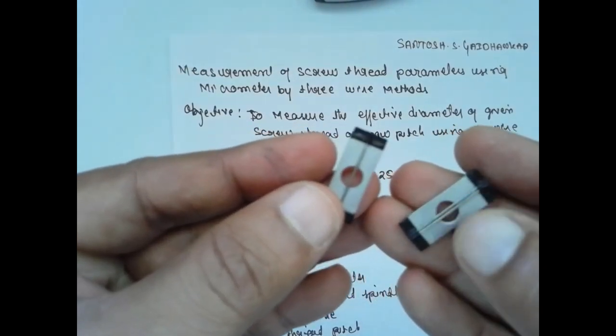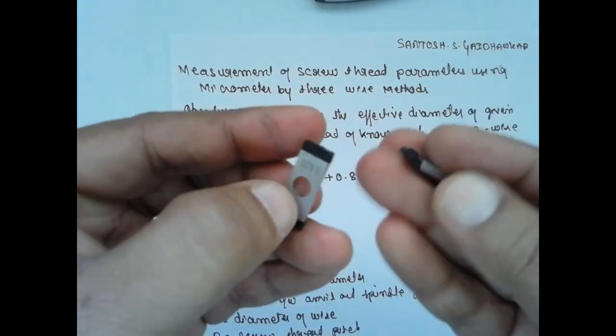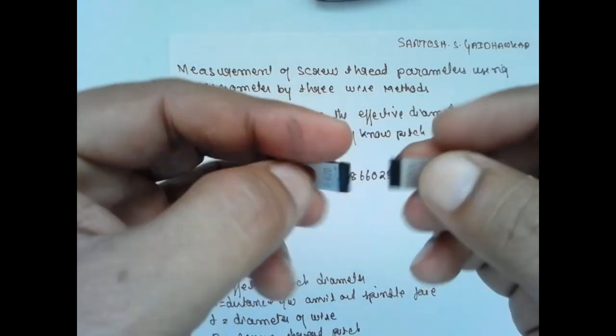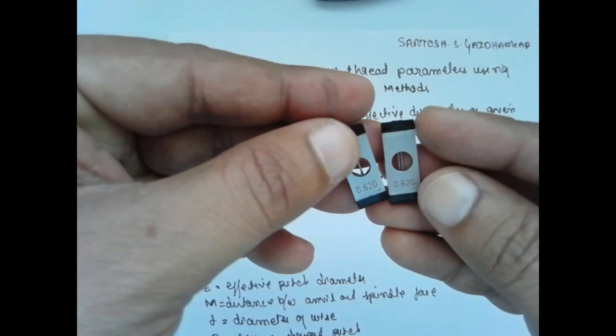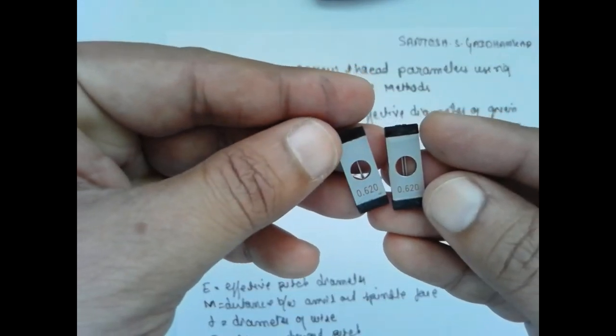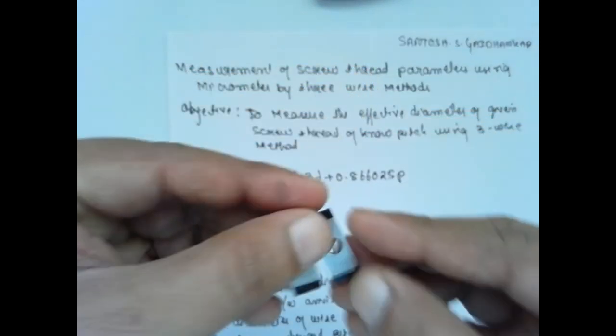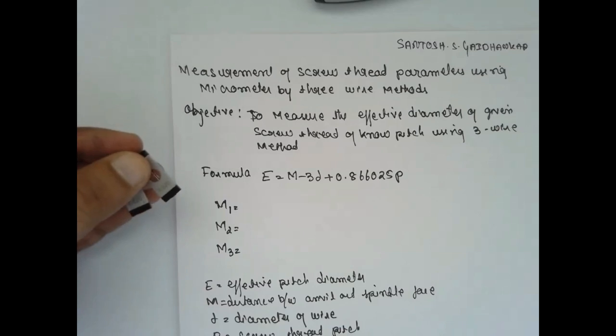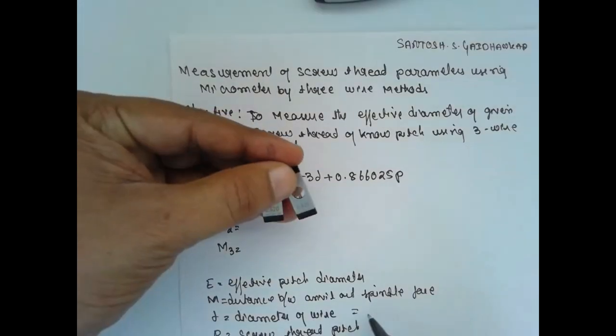The diameter is mentioned at the back side of the three wires. Diameter is 0.620 mm. The diameter is equal to 0.620 mm.